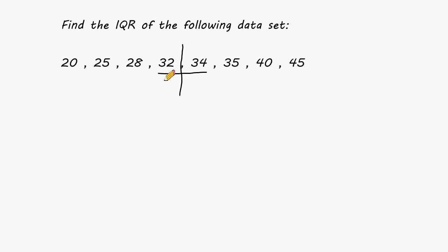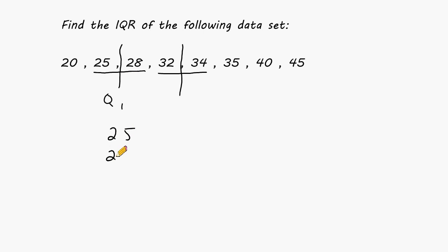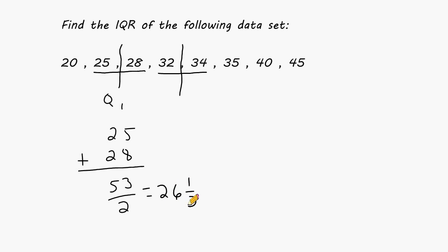Now we take the first half of our data set and figure out what the median of the first half is — that's going to be Q1. We draw a line right in the middle of these four numbers. Notice there is no single middle number, so we have to figure out what is exactly in the middle of 25 and 28. When you have two numbers and want to find the exact middle, you add them together and divide by 2. When we add 25 and 28, we get 53, and 53 divided by 2 gives us 26.5. So Q1 is 26.5.